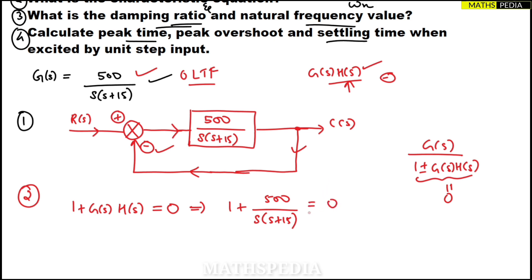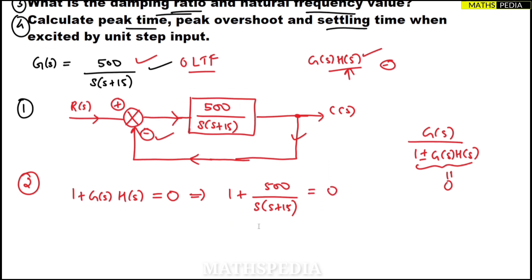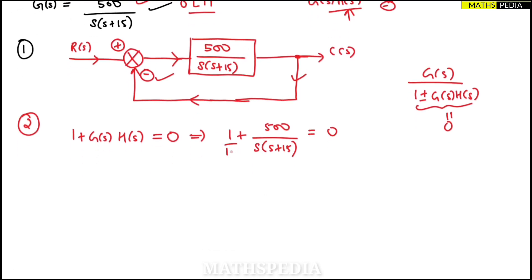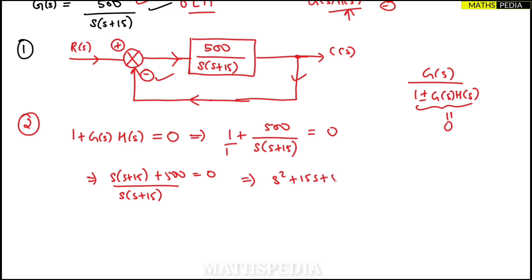So we have 1 plus 500 divided by s(s+15) equal to zero. Taking LCM, we get s(s+15) plus 500 equal to zero, divided by s(s+15). Expanding, this gives s² plus 15s plus 500 equal to zero, and since zero times anything is zero, this is the characteristic equation.